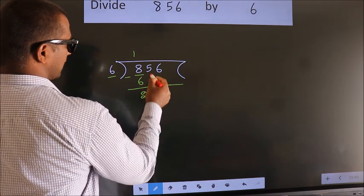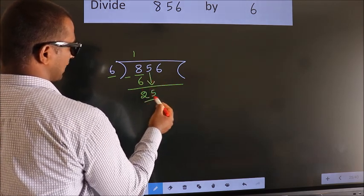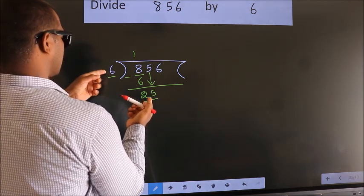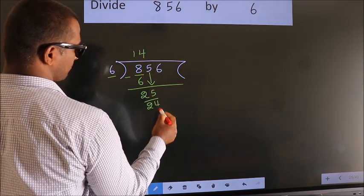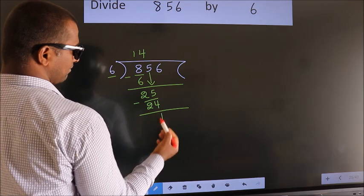After this, bring down the beside number, so 5 down. So 25. A number close to 25 in 6 table is 6 4s 24. Now we subtract. We get 1.